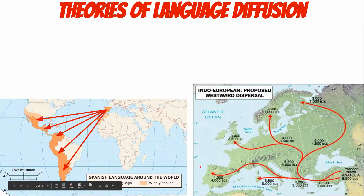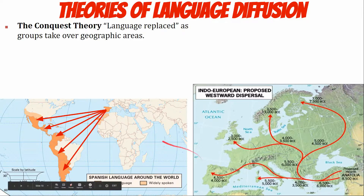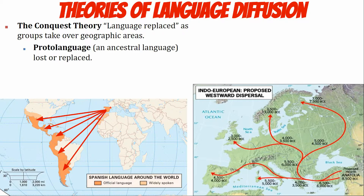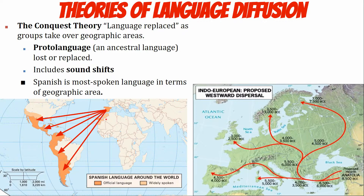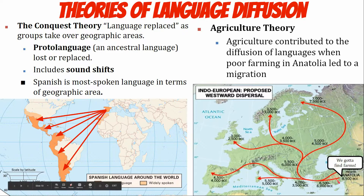There are basically two theories for why language diffused. The first is language replacement, or the conquest theory — like what the Spanish did in Latin America. Spanish replaced native Mayan, Aztec, and other ancestral languages, which is why Spanish is spoken over more surface area of the earth than any other language. The second theory relates to food and migration: as the hearth became overcrowded or less fertile, people spread out, and as distance grew, language differences developed.